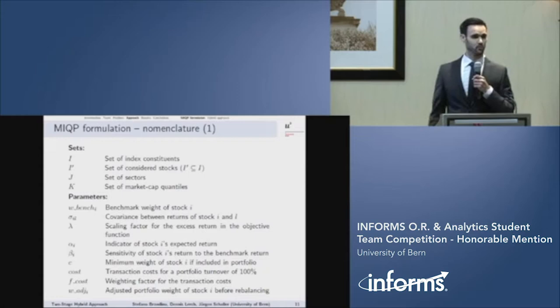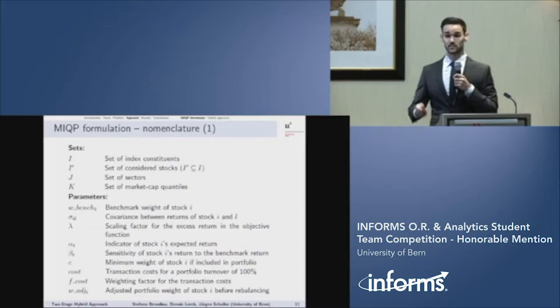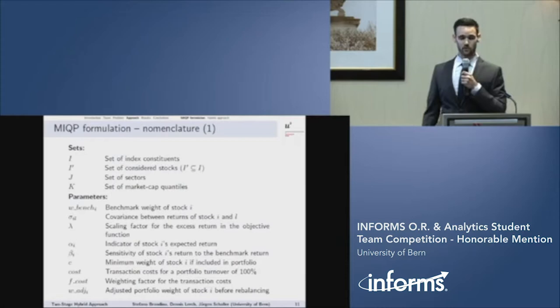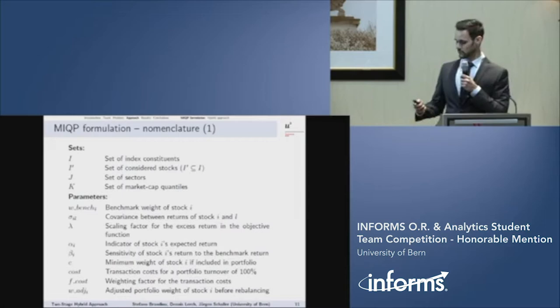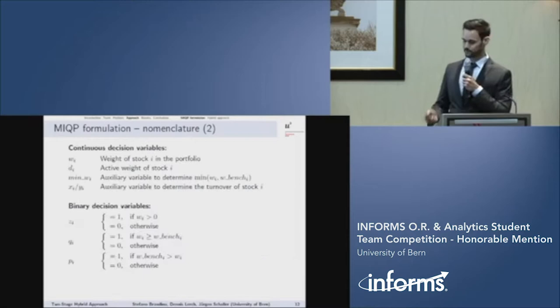We used the set i, which contains all stocks from the index. However, in our approach, we just use a subset of them, which we denote in i prime. Furthermore, we have the parameter W bench, which is the benchmark weight of each stock. And additionally, we implemented the parameter cost, which is the transaction cost for rebalancing.